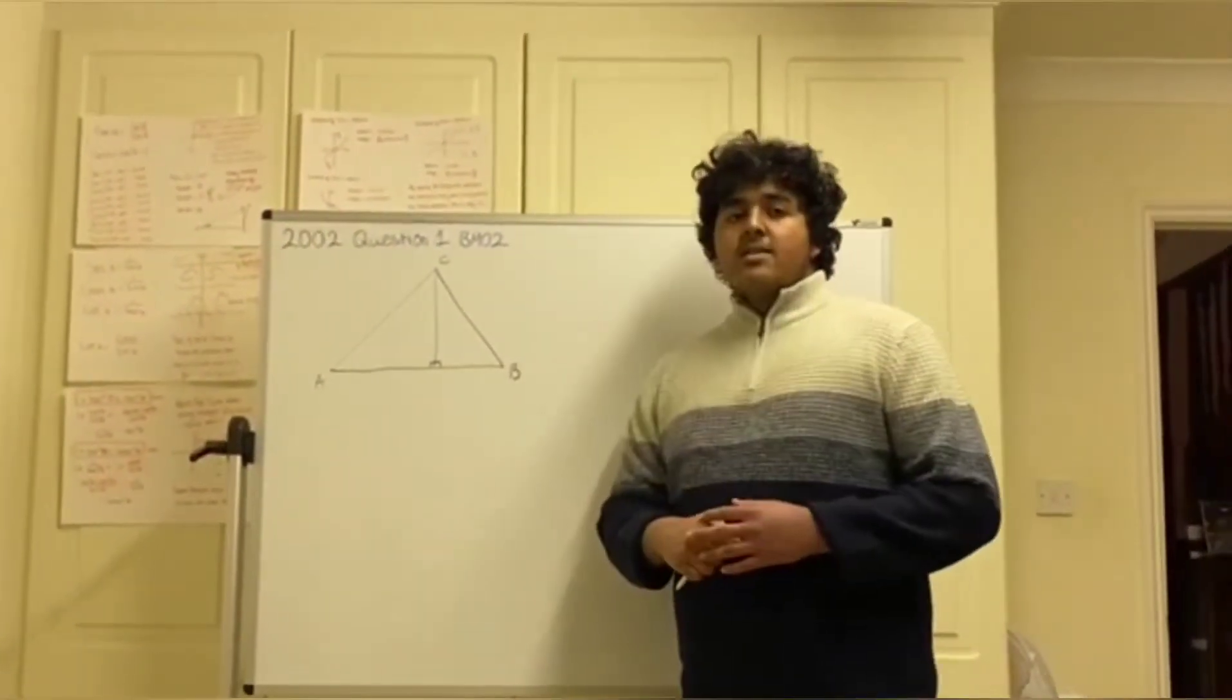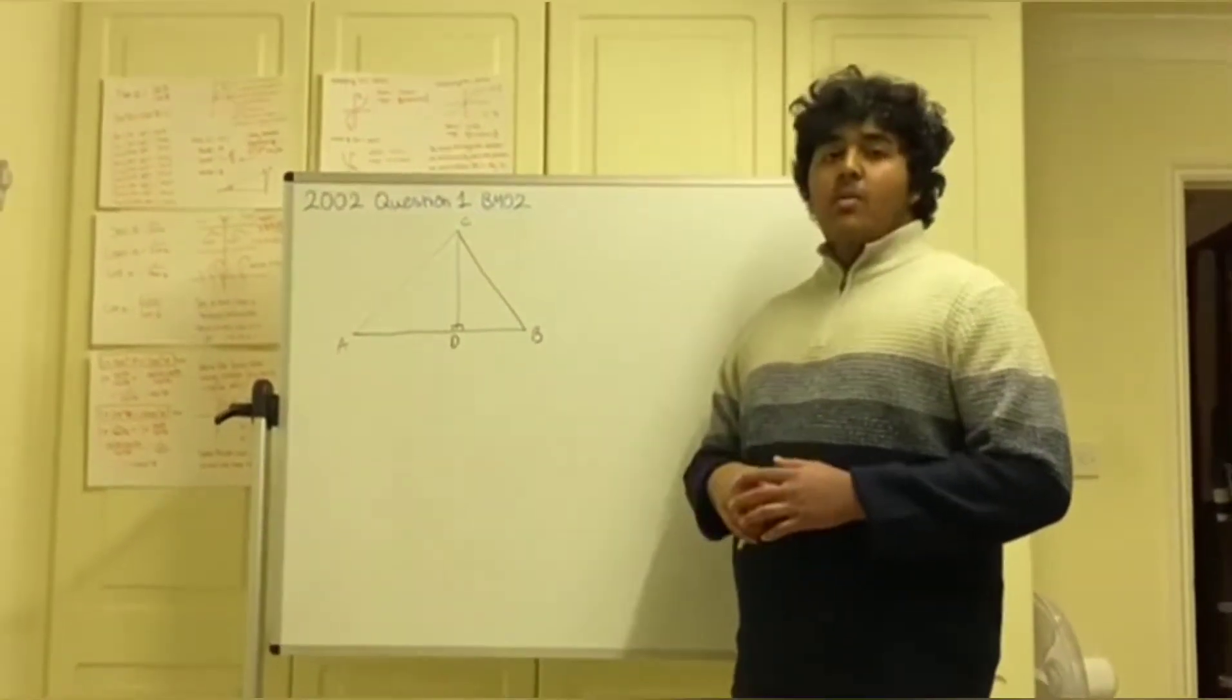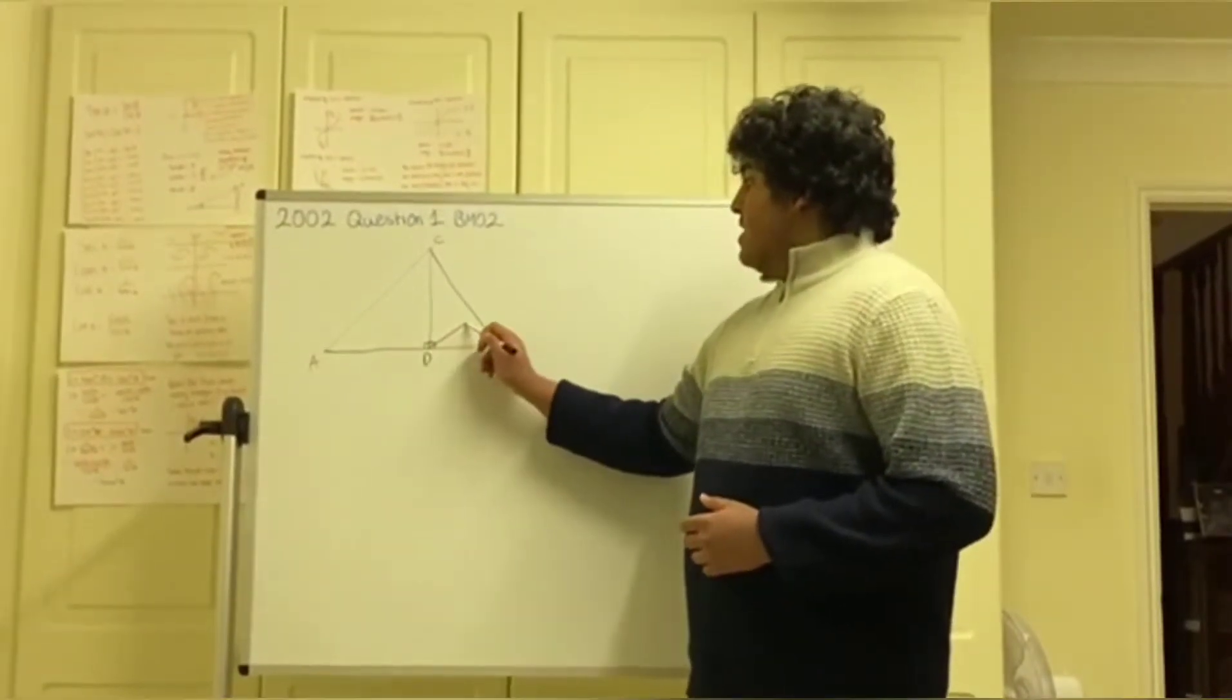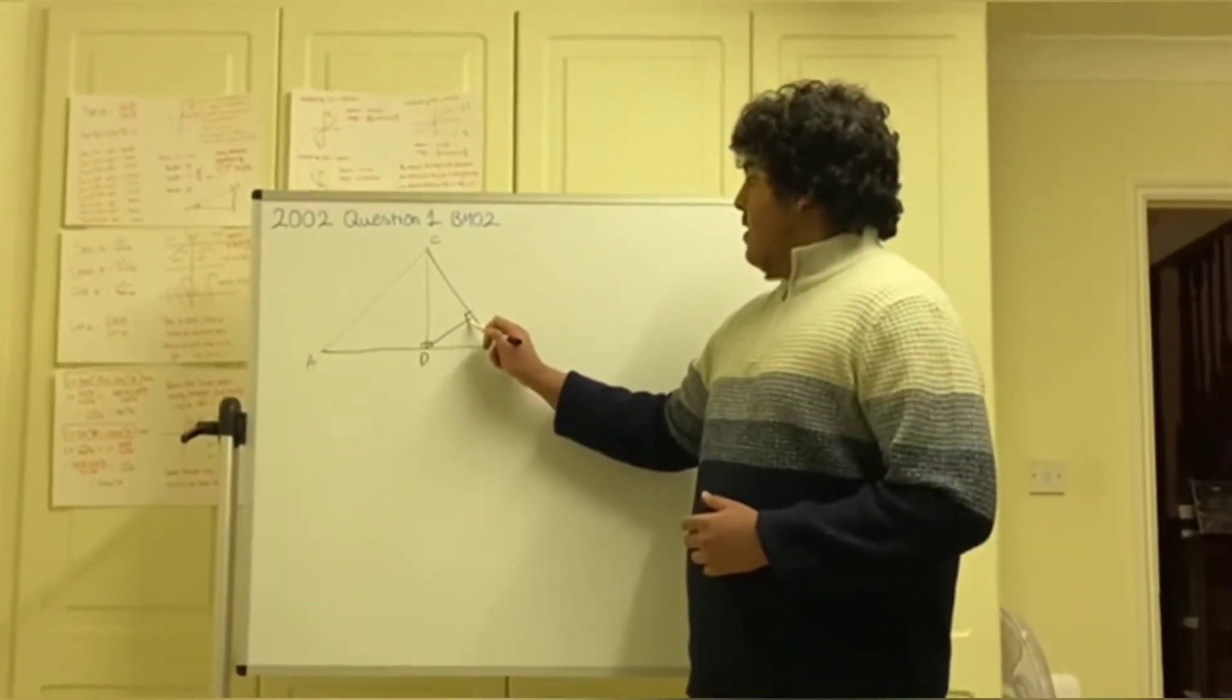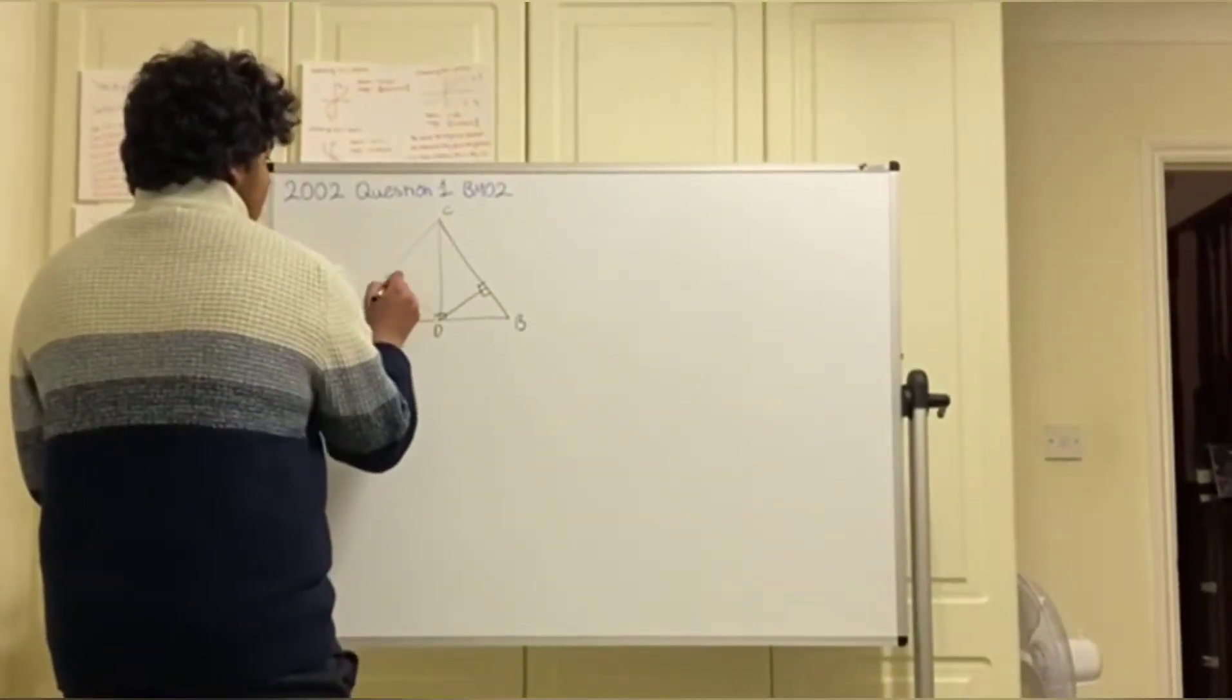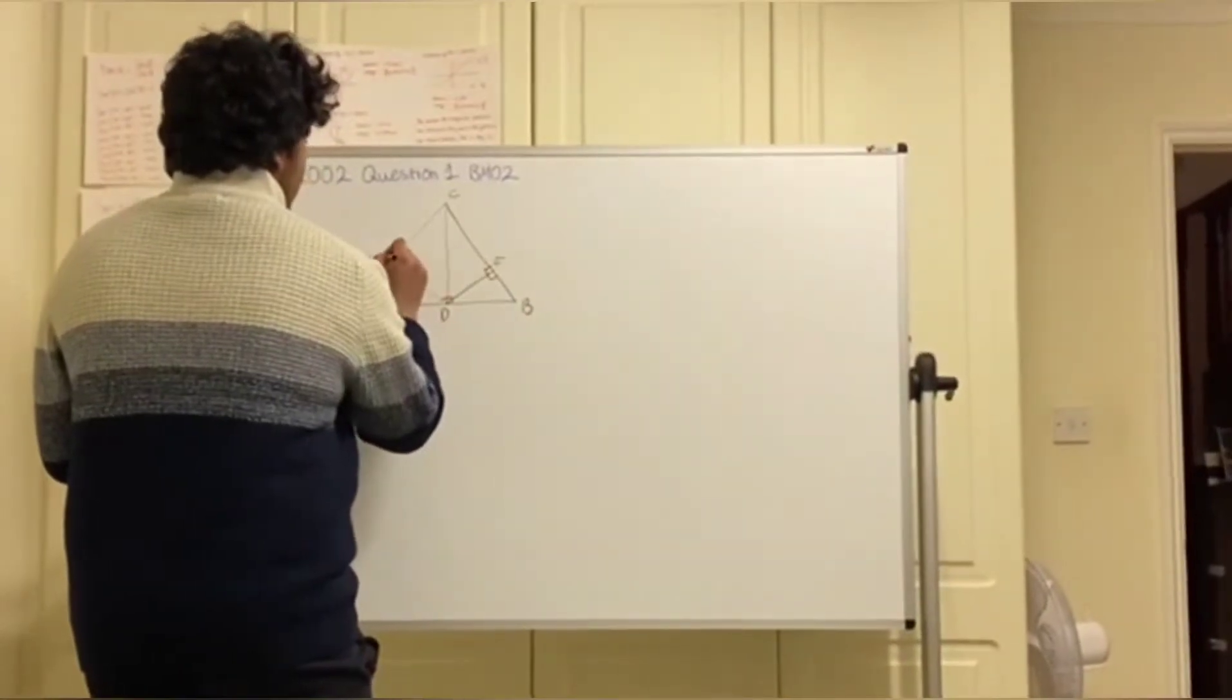The question then says that the perpendicular from point D, which we'll label this point on AB where C is brought down to, has perpendicular to line CB and line AC as F and E respectively.